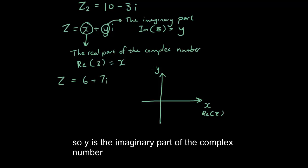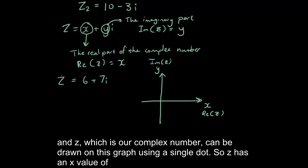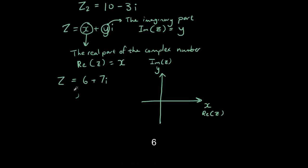and y is the imaginary part of the complex number. So, y is the imaginary part of the complex number and z which is our complex number can be drawn on this graph using a single dot. So,